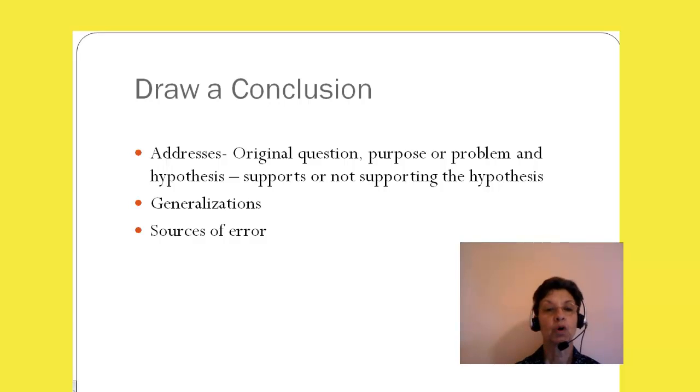We're going to draw a conclusion. This is where we end our work or our investigation by drawing a conclusion. The conclusion always includes the original question, the purpose or problem, and it supports or does not support the hypothesis, but it must be stated. So the conclusion is a generalization. It tries to display the generalizations that can be made. And we also include the sources of error.